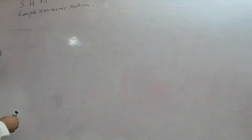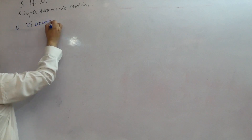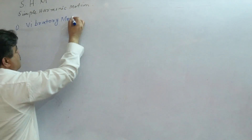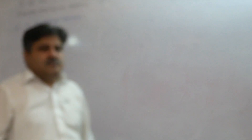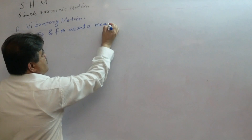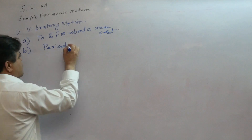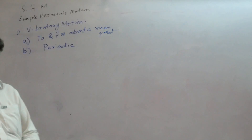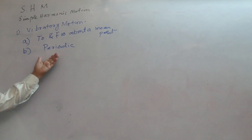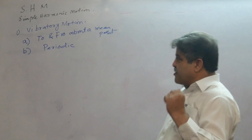What is simple harmonic motion? Number one, it should be a vibratory motion. What is a vibratory motion? A vibratory motion is, number one, to and from about a mean position, and number two, it is periodic. These two conditions make the body vibratory. Every vibrating motion is periodic, but every periodic motion is not vibrating — like the motion of the earth is periodic, but it is not vibrating.